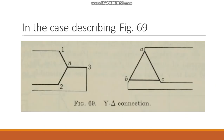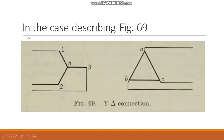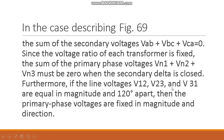In the case describing Figure 69, the sum of secondary voltages VAB, VBC, and VCA equals zero. Since the voltage ratio of each transformer is fixed, the sum of the primary phase voltages VN1, VN2, and VN3 must also be zero when the secondary delta is closed.